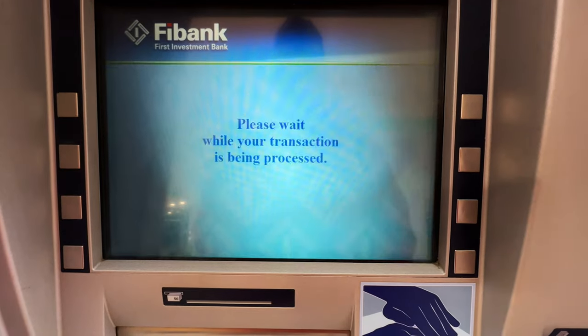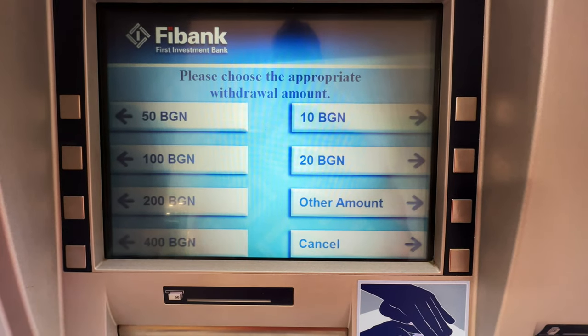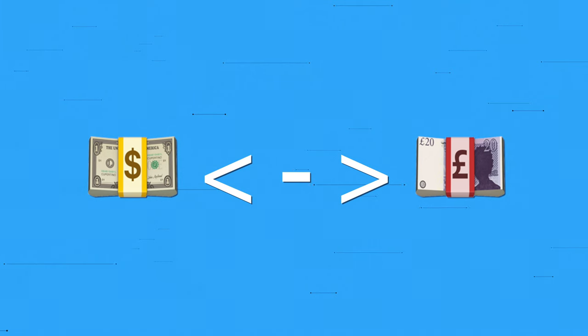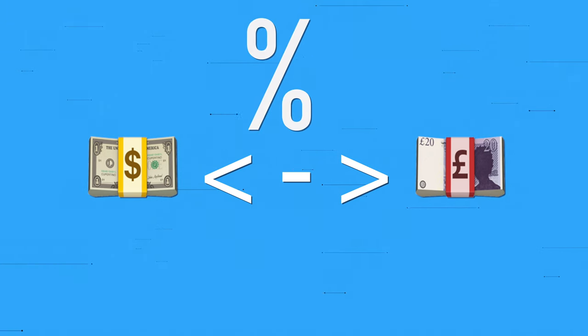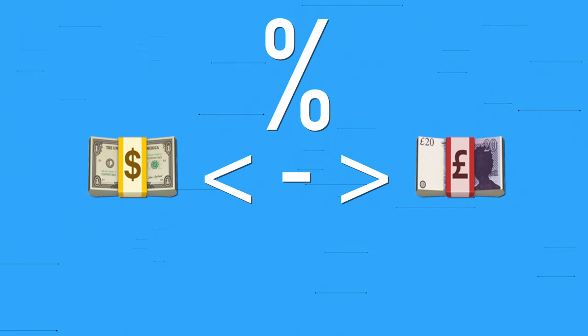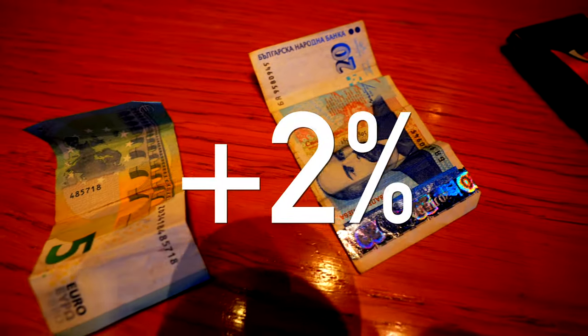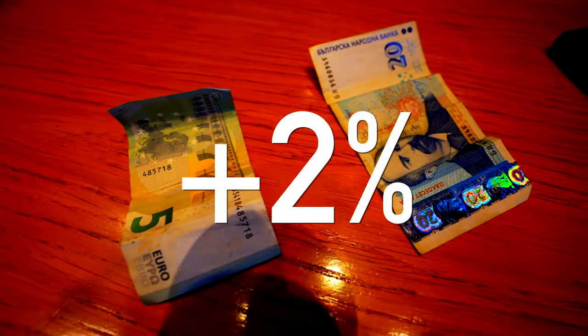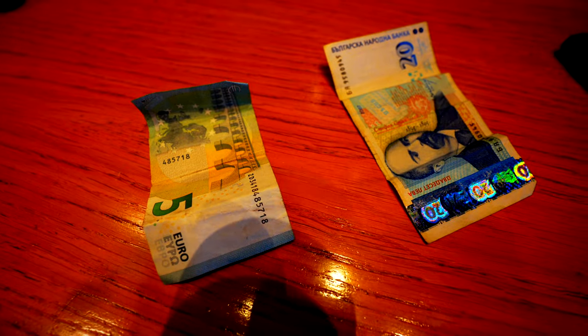DCC is essentially a process where the ATM machine provider comes up with a conversion rate between your currency — the currency that you have at home from your local bank — and their local currency, which can be whatever the currency is in that particular country. ATM providers do this simply to make a profit, charging you a conversion rate of 2% or more per transaction every time you pull money out of the ATM if you choose their option of having the currency converted for you.